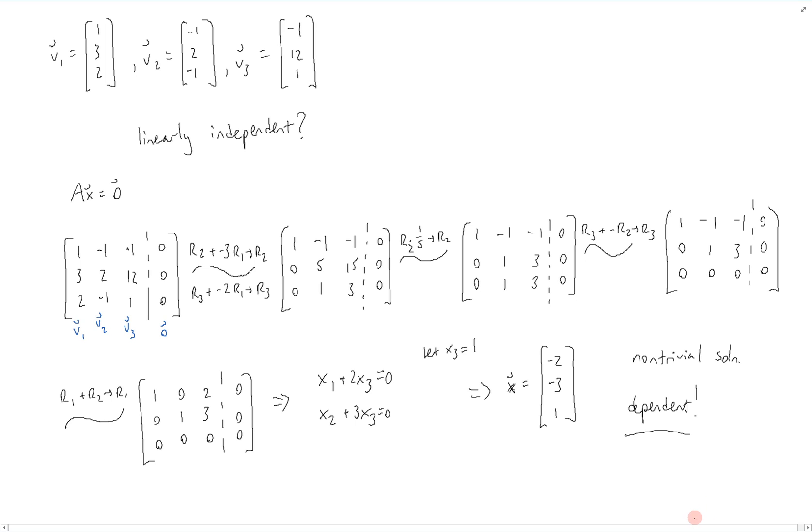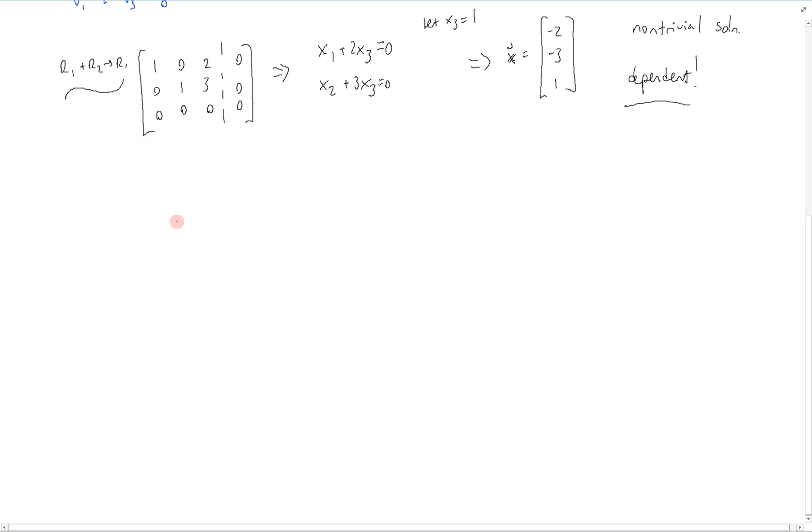Now to find how exactly they're dependent, we can further analyze the solution. So writing out again what the homogeneous equation actually says, we see that it is x1v1 plus x2v2 plus x3v3 equals the zero vector. From these relations, we know that x1 equals negative 2x3 and x2 equals negative 3x3.